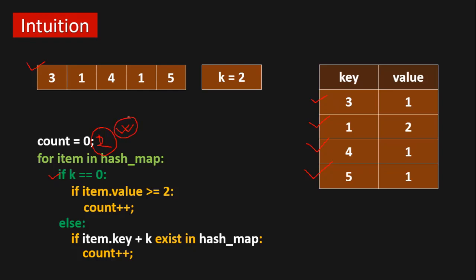For a better understanding, go through your own examples: first construct a hash map from the array, then use this algorithm to find the k-diff pairs. This solution takes O(n) time complexity where n is the length of the given array, and O(n) space complexity to construct the hash map. If you have any questions or suggestions, let us know. Thanks for watching.